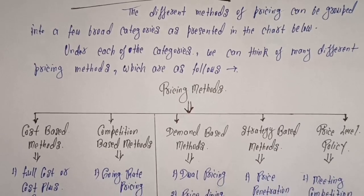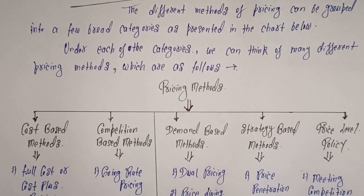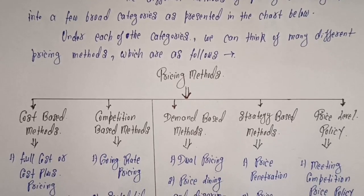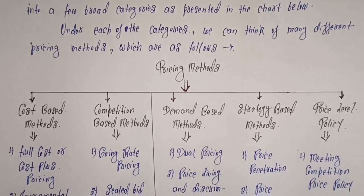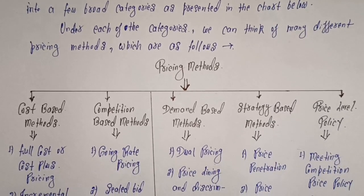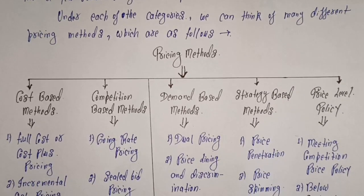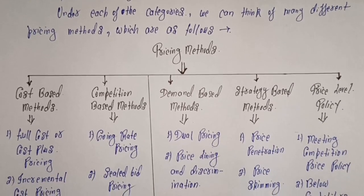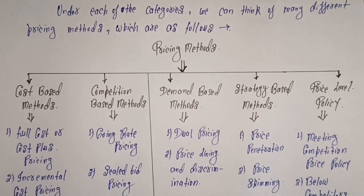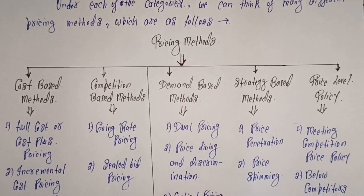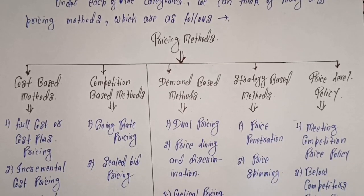The first category is cost-based methods. The second is competition-based methods. The third is demand-based methods. The fourth is strategy-based methods. The fifth is the price level policy.